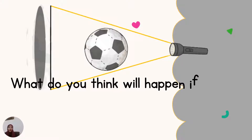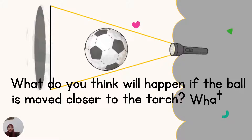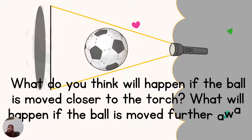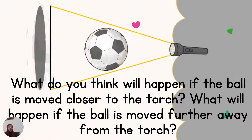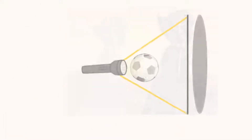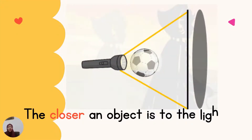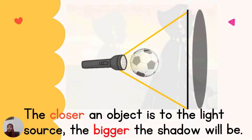So what do you think will happen if the ball is moved closer to the light? The closer an object is to the light, the bigger the shadow will be. If we take the object near to the light source, the shadow that forms will be big — because it's blocking more light.